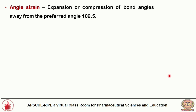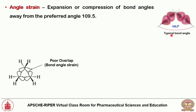In a normal sp3 hybridized structure, the orbitals completely overlap. But in cyclopropane, there is no complete overlap — only poor overlap. Some bending of orbitals occurs, creating bent bonds. This bending away from 109.5° is the angle strain. The bond angle in cyclopropane is 60°, demonstrating significant angle strain due to poor orbital overlap.